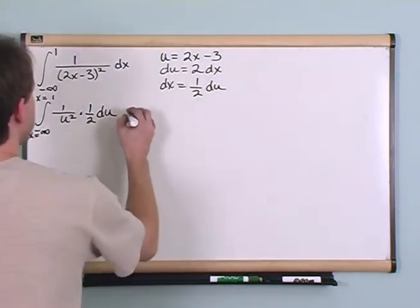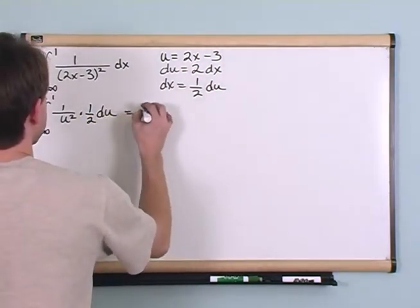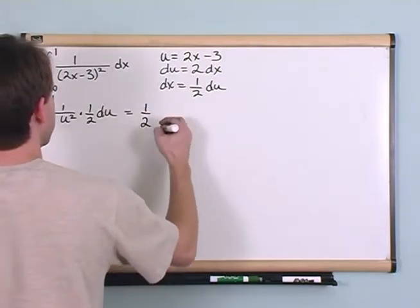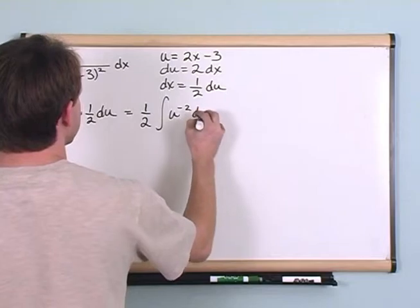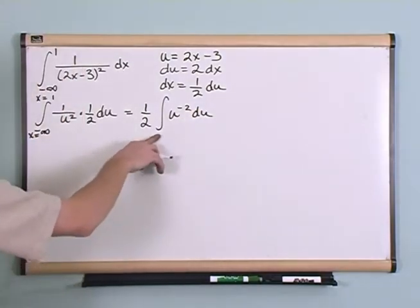Okay, so in the end you'll have one-half integral of u to the minus two du, but in order to do this we have to change our limits of integration.